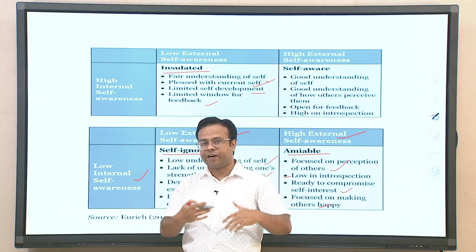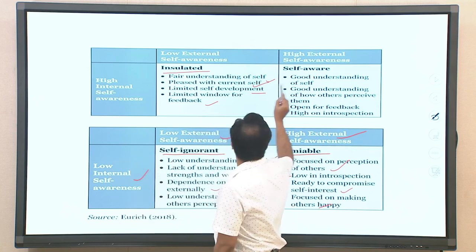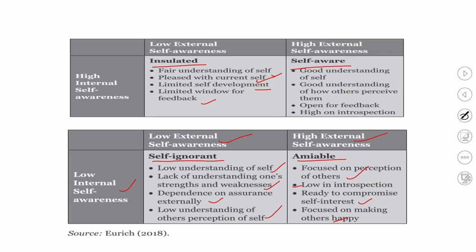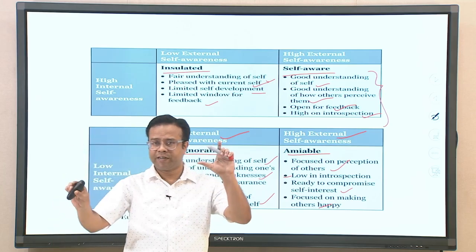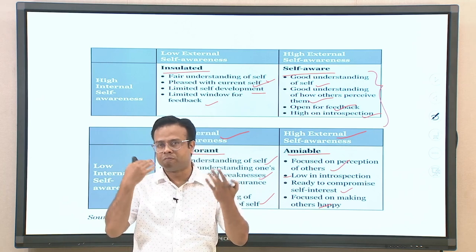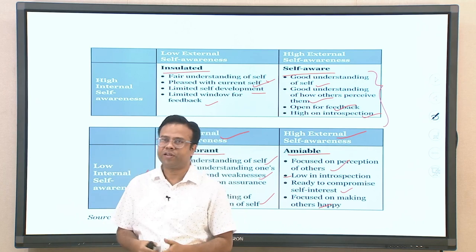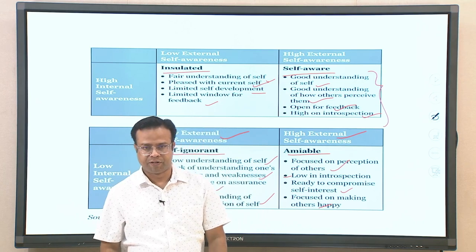The fourth and ideal pattern — both high internal and high external self-awareness — defines truly 'self-aware' individuals. They have good understanding of themselves, good understanding of how others perceive them, are open to feedback, and high on introspection. This combination represents genuine self-awareness; we all fall into one of these four categories based on our internal and external self-awareness levels.